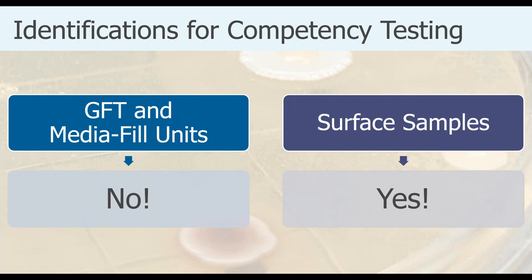The chapter now clarifies identification requirements for competency testing. For glove fingertip testing and media fill units with positives, you do not need to identify organisms to the genus level, and you do not need to identify positive media fill units. However, for surface samples taken during competency testing, the chapter refers to Section 6 on surface sampling, meaning identifications are required on any surface samples from competency tests. The action levels for surface samples after the media fill test are the same as those listed in Section 6.